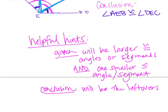Some helpful hints on the subtraction property: what you are given will always be larger congruent angles or segments — you have to be told the whole thing is congruent. You also have to be given that a smaller part on the inside is congruent. What you will conclude will always be the leftover. If you take the larger one and subtract out the smaller congruent piece they gave you, whatever's left will be congruent — that's your conclusion.